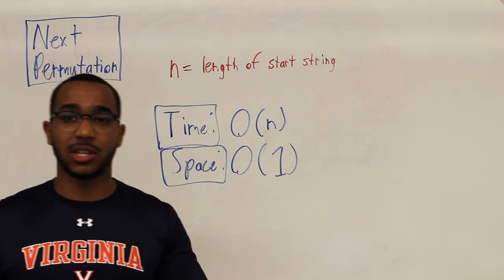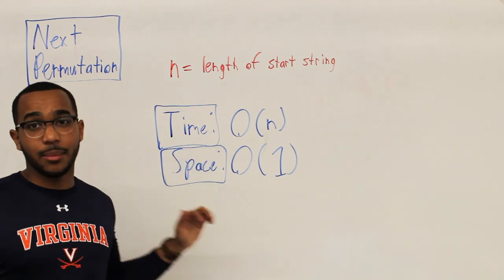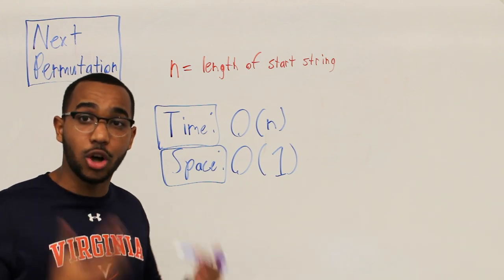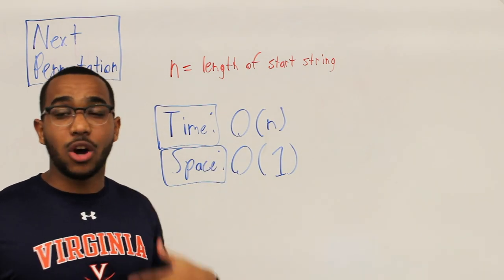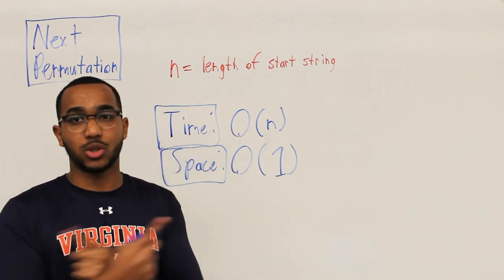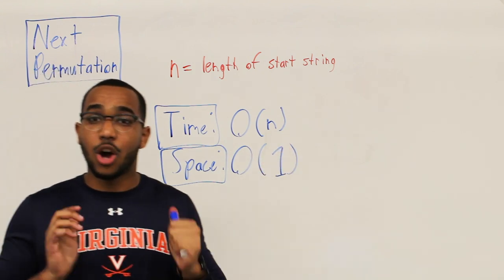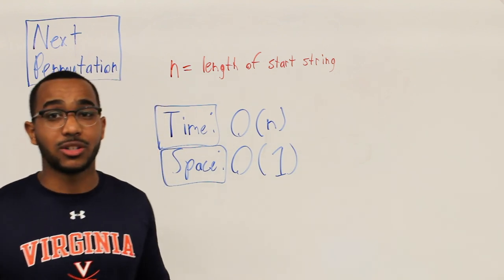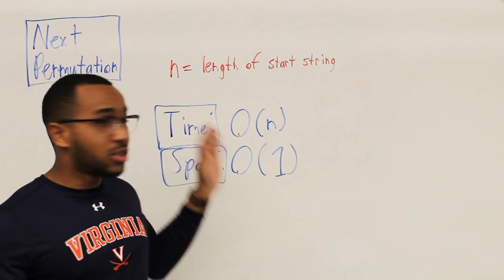The time and space complexities are straightforward. N is the length of the permutation. The time complexity is O(N) — we scale linearly as input grows. We do a linear time pass to find the longest decreasing sequence, a linear time pass to reverse that sequence, and a constant time swap. None of this takes us past linear time. For space, we stay O(1) constant — we're just using local variables and pointers, nothing that scales with input size.